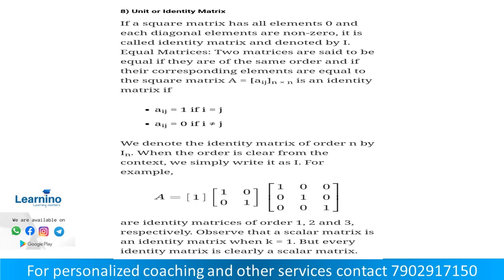The next one is the identity matrix. If a square matrix has all elements zero except each diagonal element which is 1 (non-zero), it is called an identity matrix and is denoted by I. It is a special case of scalar matrix. For example, the identity matrix of order two has diagonal elements 1 and off-diagonal elements 0. The identity matrix of order three has ones on the diagonal and zeros elsewhere.